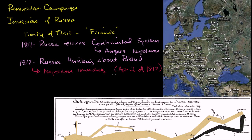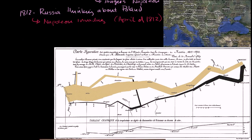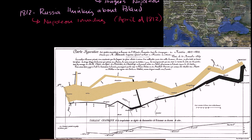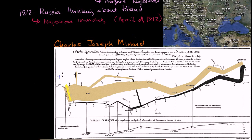To understand how devastating this campaign ends up being to Napoleon, I'm going to use one of the most famous charts in the history of charts. Some people consider this to be the best, most well-designed chart ever. It was created by Charles Joseph Menard. You can actually get a bigger version on Wikipedia. This is a smaller version, but it's a fascinating chart. It shows the size of Napoleon's army as it invades Russia, shown by the width of this brown line.